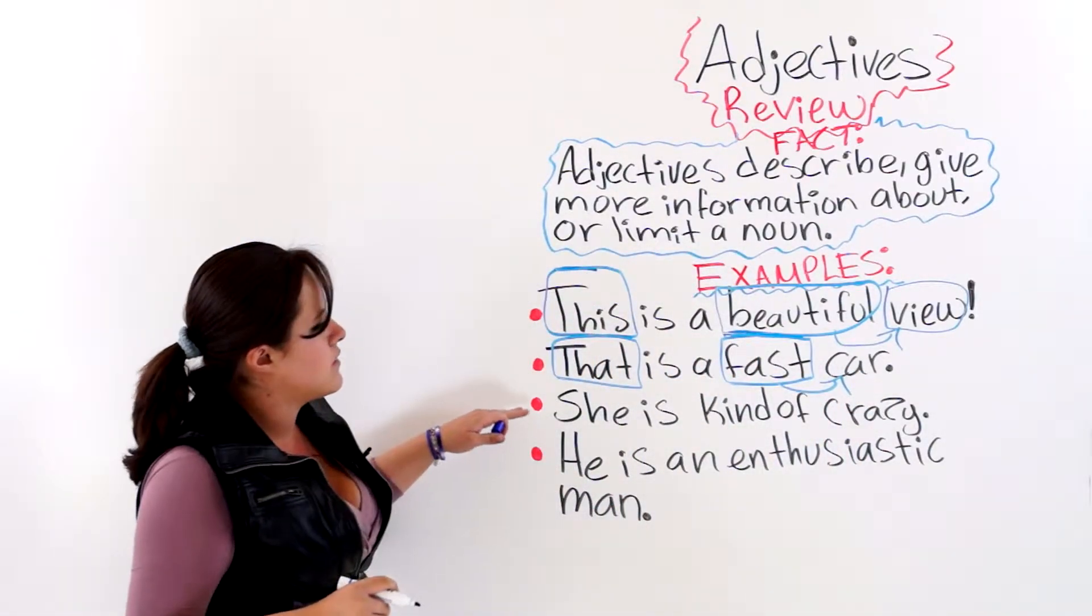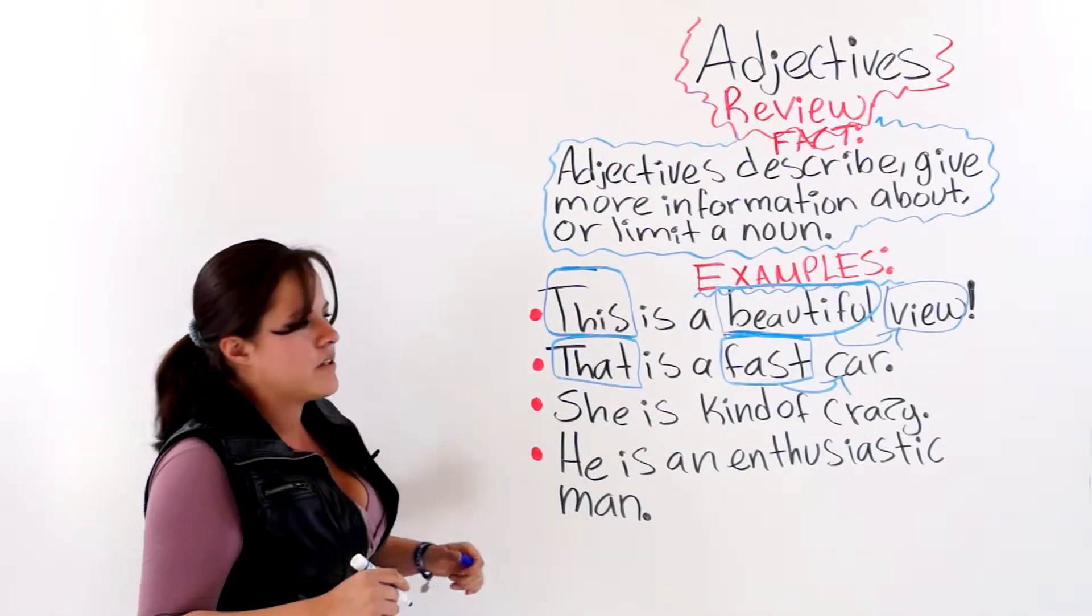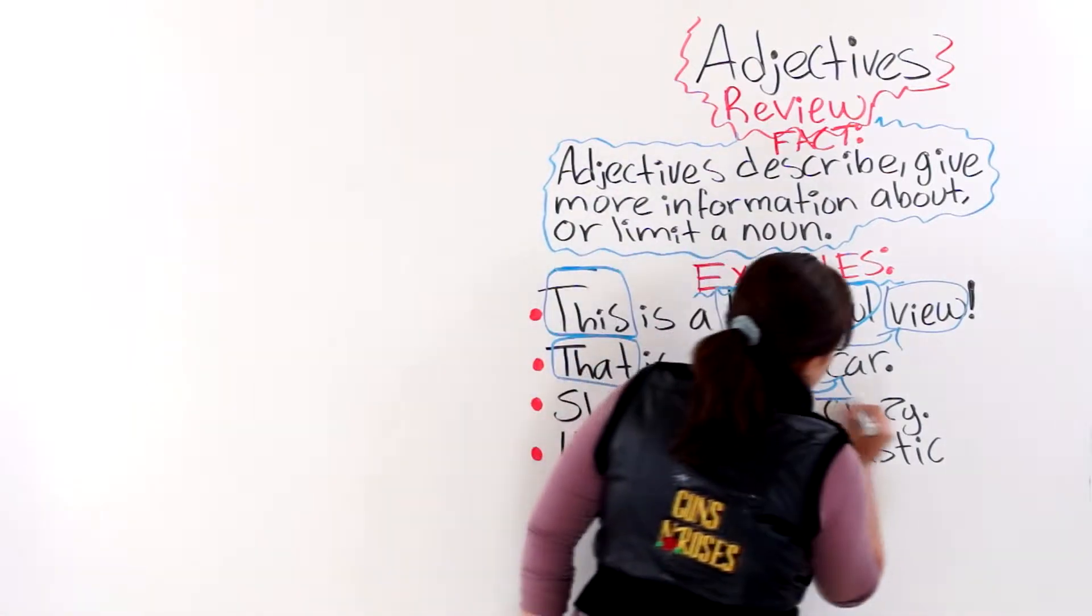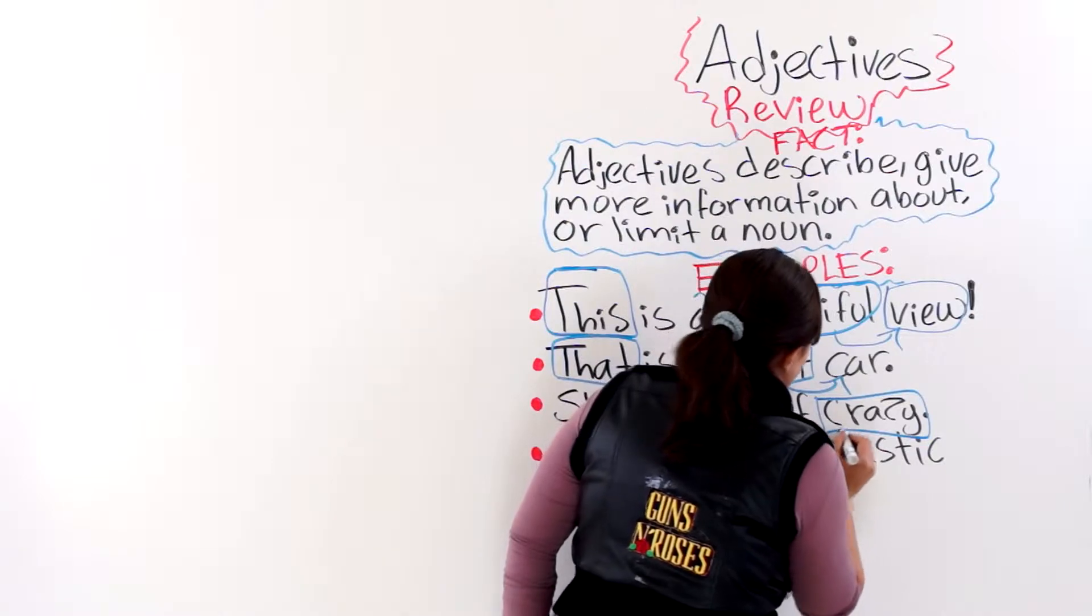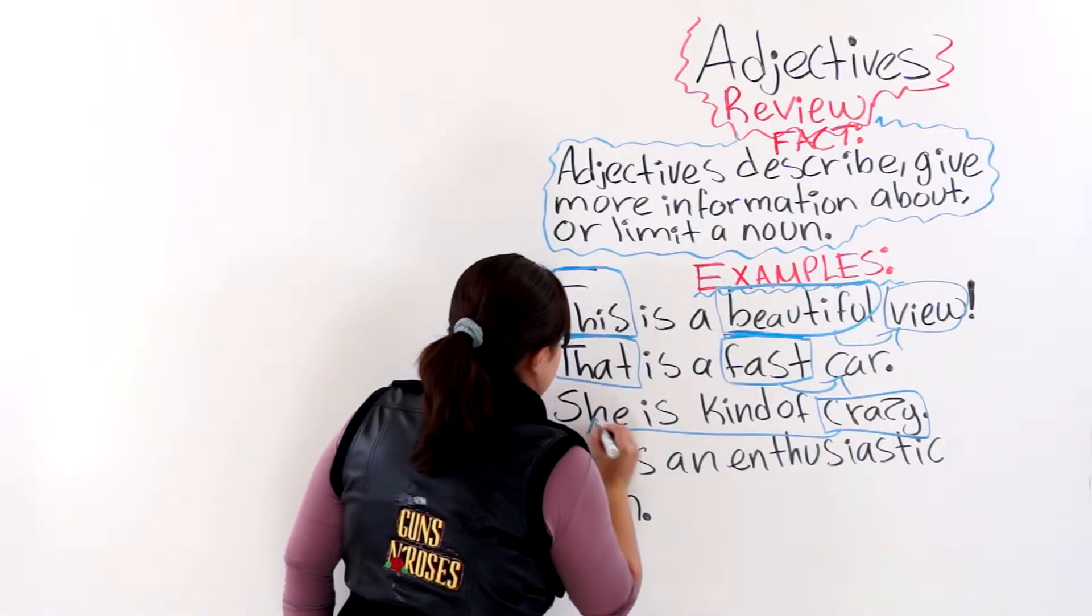And the next one says, she is kind of crazy. Crazy would be the adjective here that is describing this pronoun.